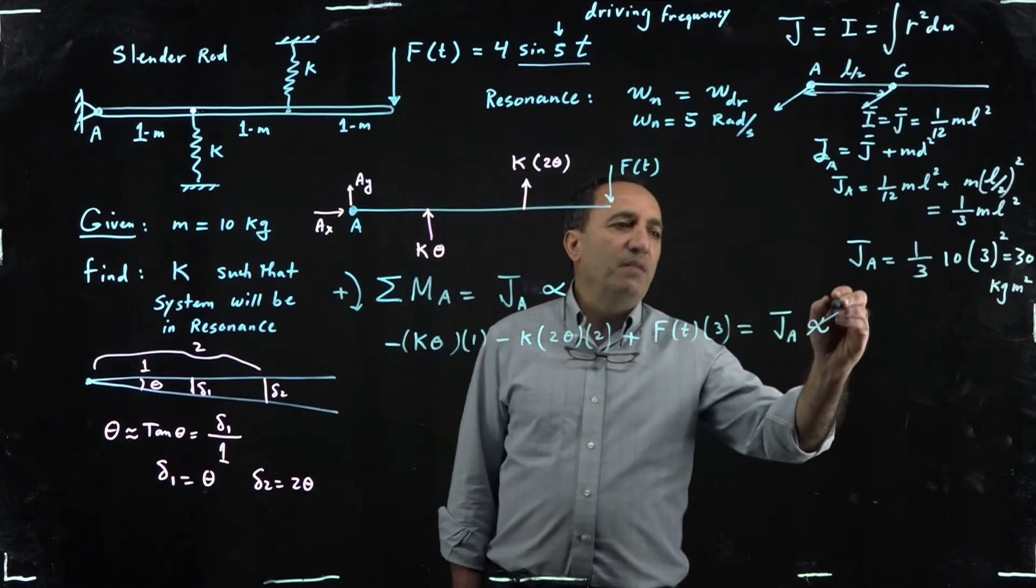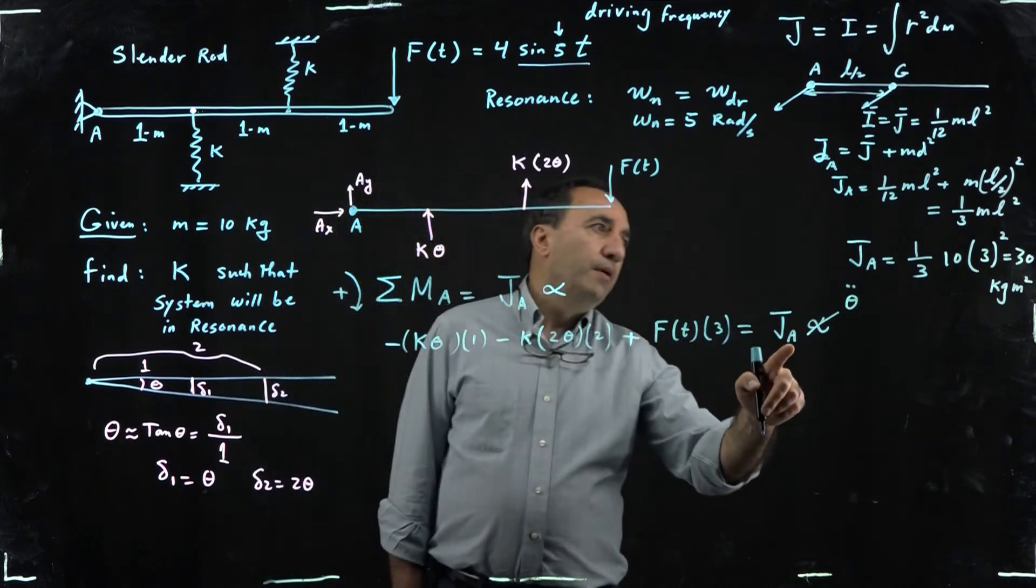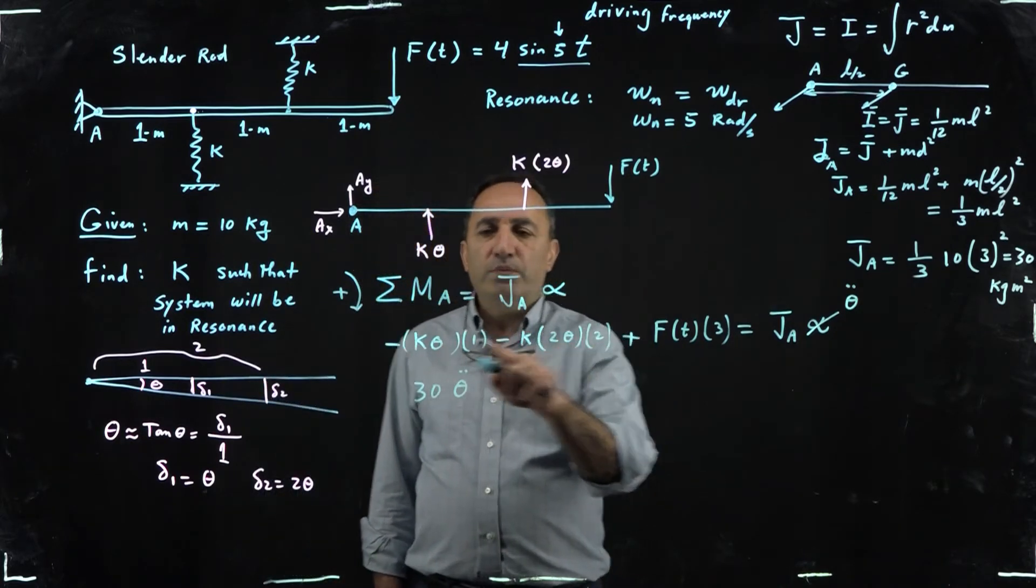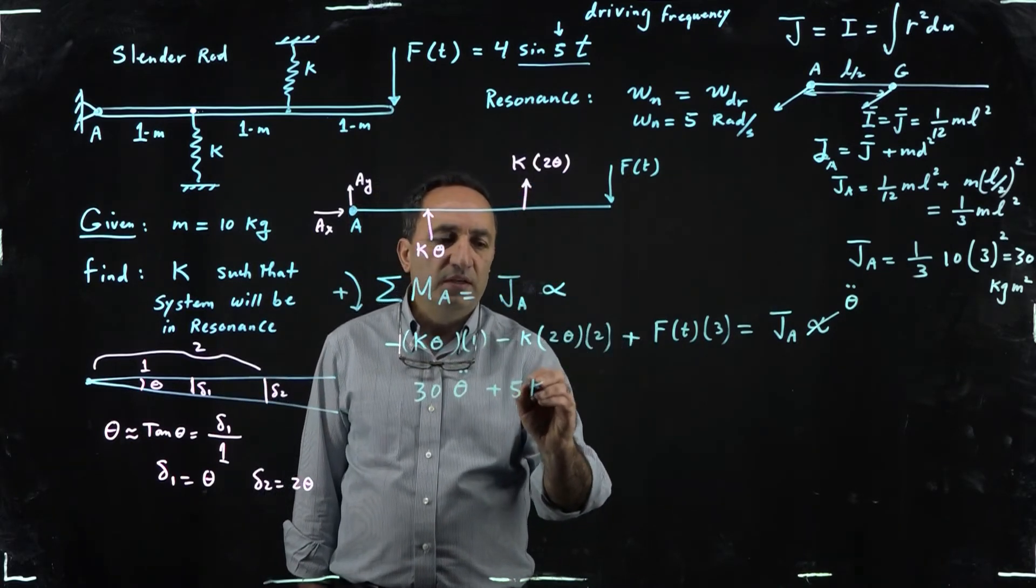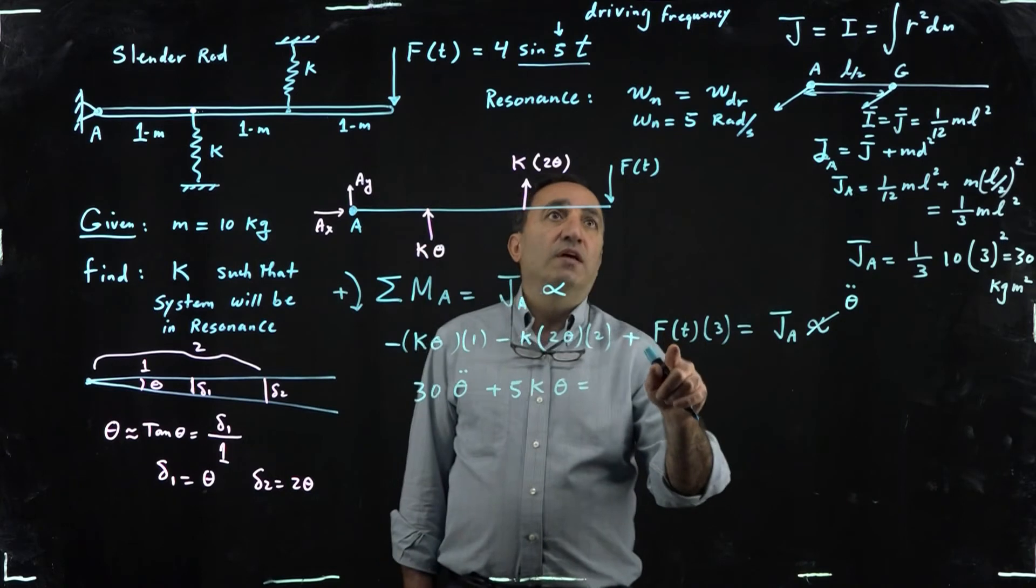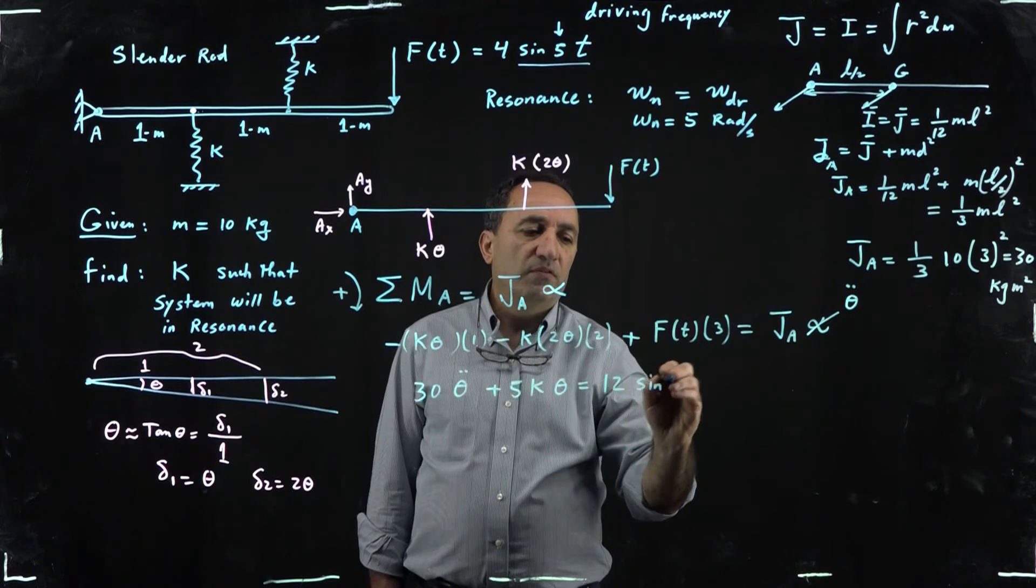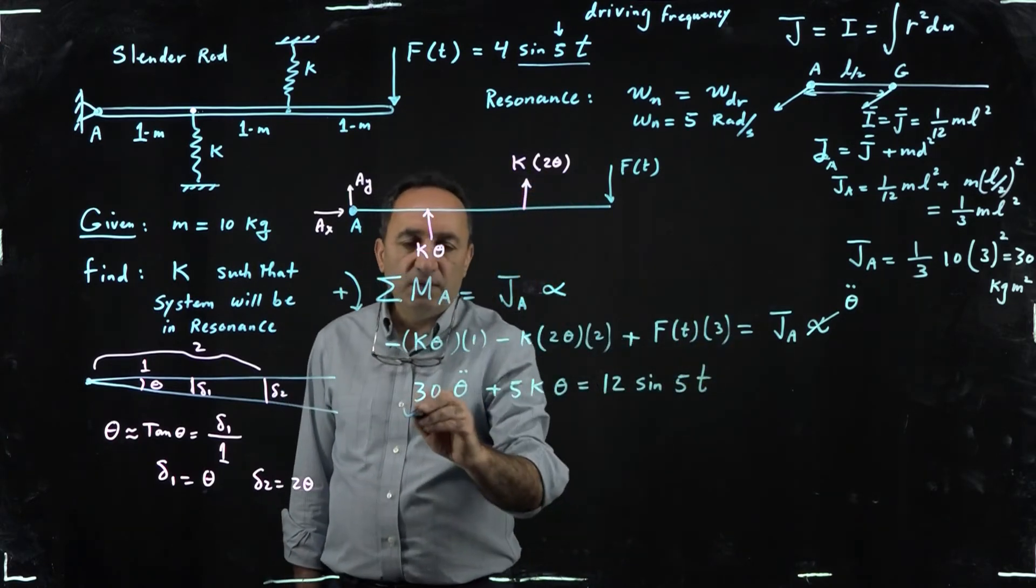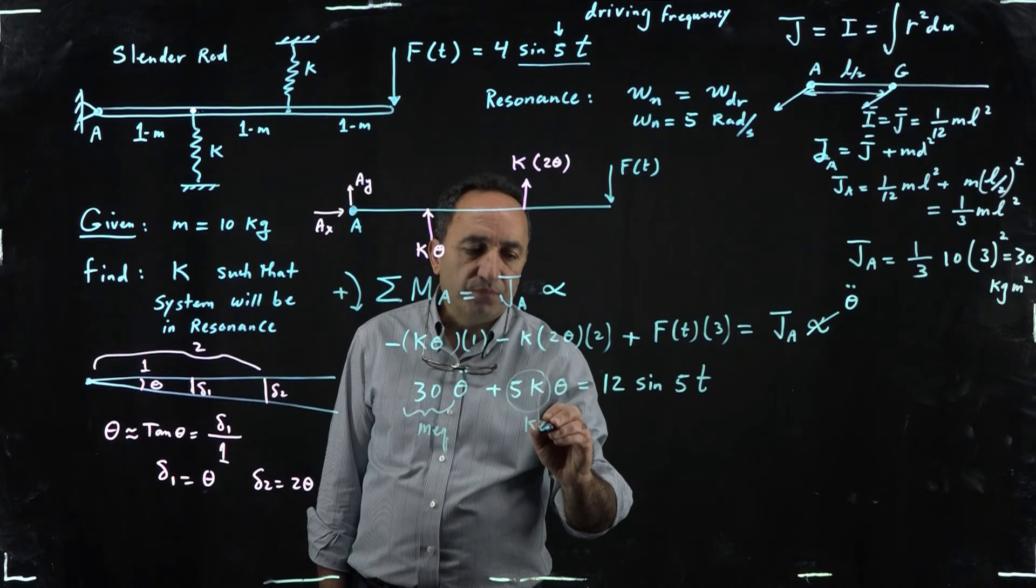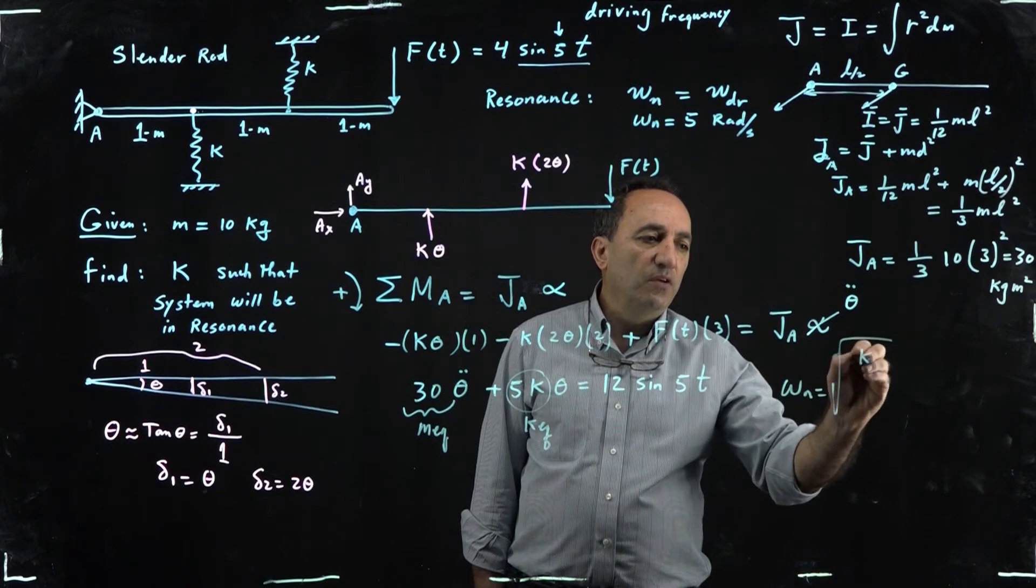And remember that alpha is theta double dot, right. So when once you clean this up you end up getting 30 theta double dot, right. You have a 4 plus 1, that's a 5K theta, and then guess what, I'm going to keep this in the other side, so that's F(t). If I take this 4 sine 5t and multiply it by 3, I end up getting 12 sine 5t. And that's all you need guys. In a way this is your equivalent mass or equivalent J, and this is your equivalent K.